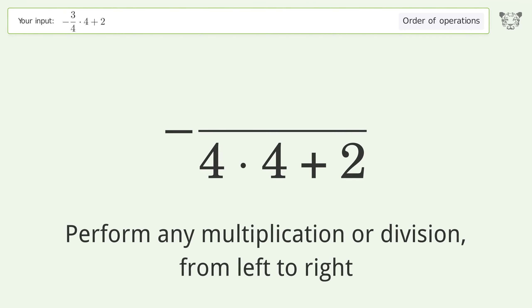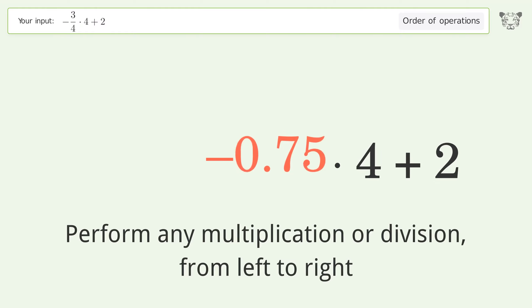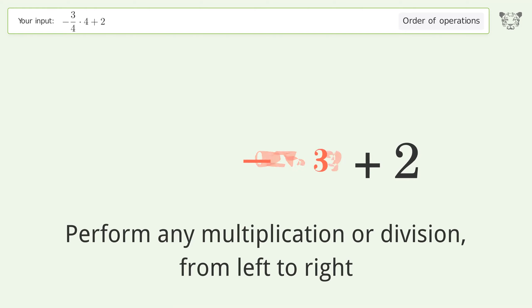Perform any multiplication or division from left to right. Negative three over four equals negative 0.75. Negative 0.75 times four equals negative three.